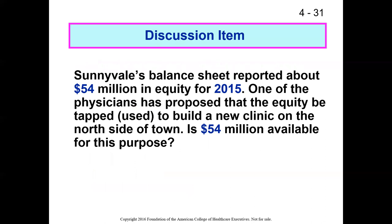Sunnyvale's balance sheet reports about $54 million in equity. A physician has proposed tapping that equity to build a new clinic on the north side of town. Is the $54 million available for this purpose? The answer is no. The right side of the balance sheet is simply claims on the assets of the organization — you can't tap into equity in that sense. Equity is not an account where money is sitting.